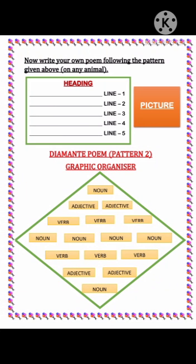Now we will learn about the diamante poem. This is the second pattern. The graphic organizer goes like this: the first line is only one noun, the second line has two adjectives, the third line has three verbs, the fourth line has four nouns, the fifth line has three verbs, the sixth line has two adjectives, and the last line is only one noun. This pattern is called the diamante pattern, which means a diamond shape.